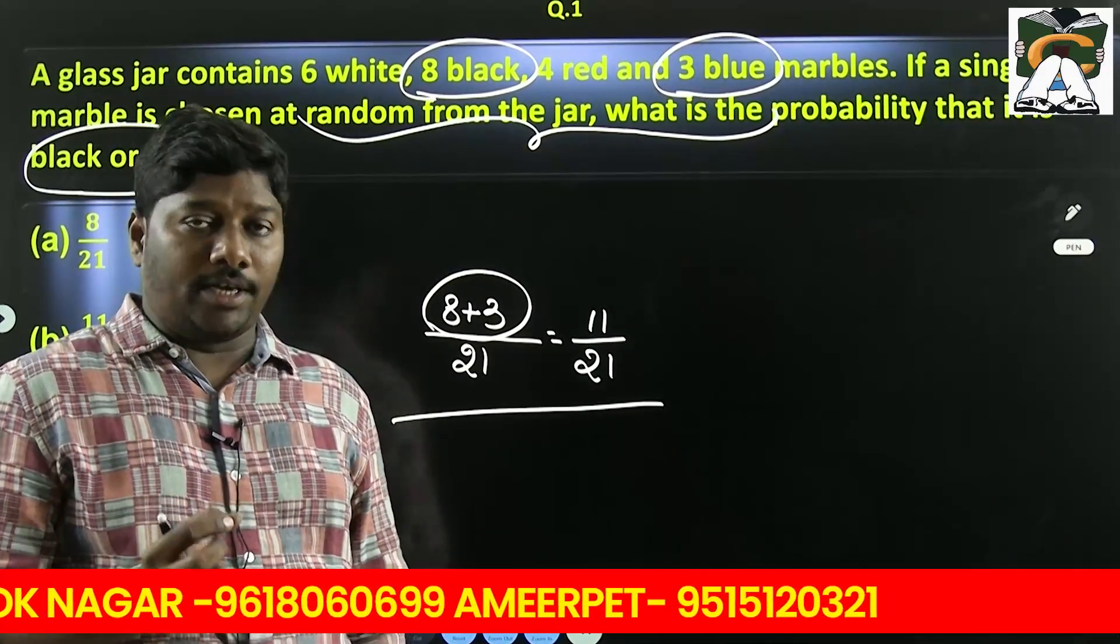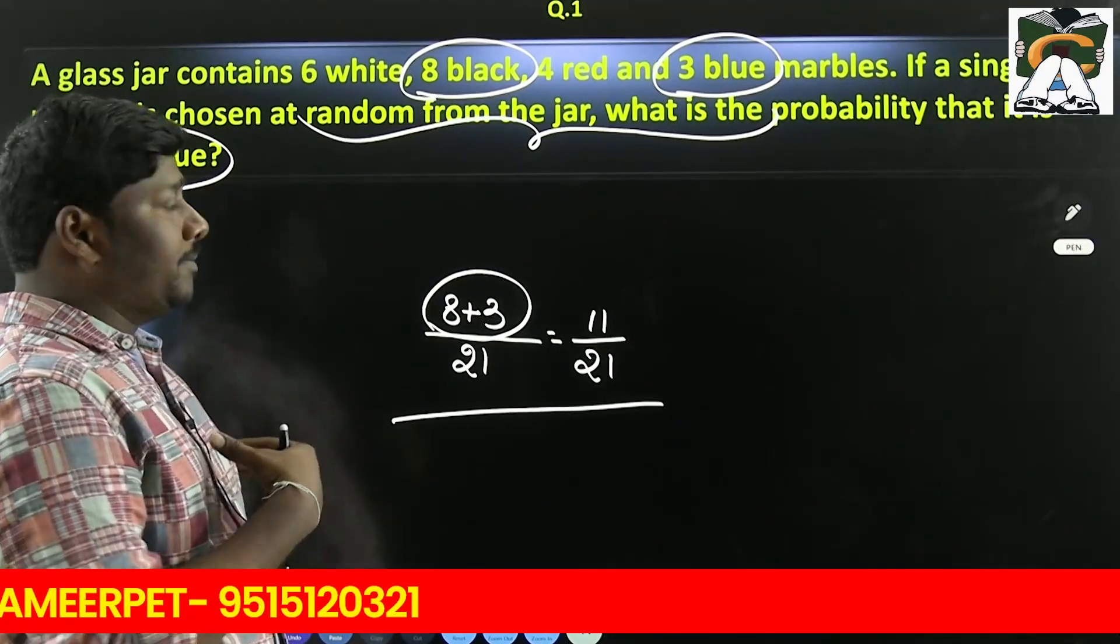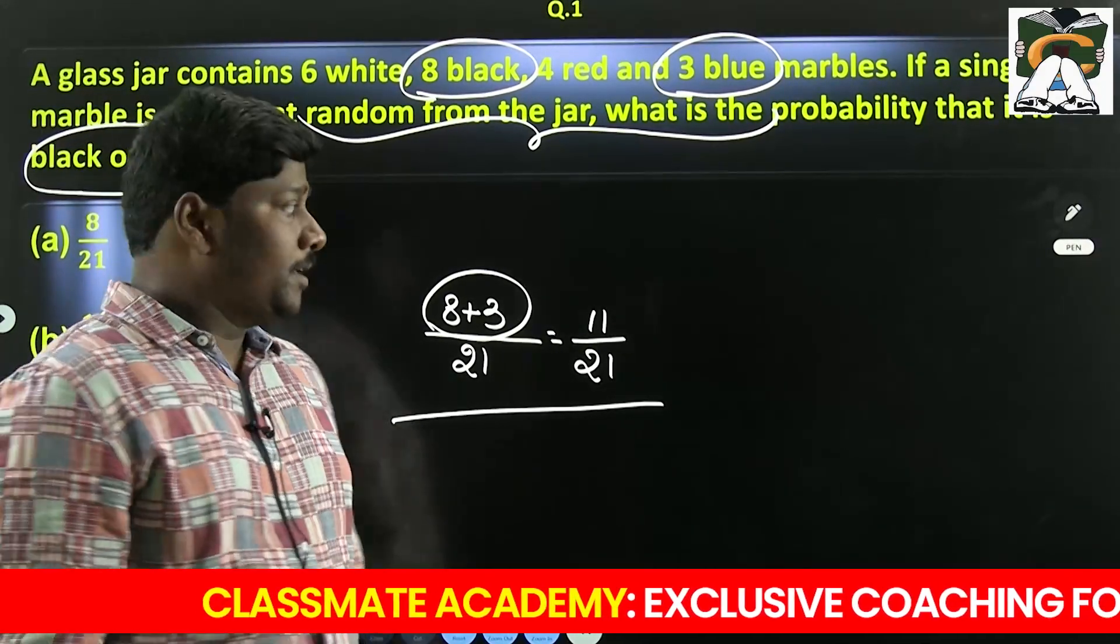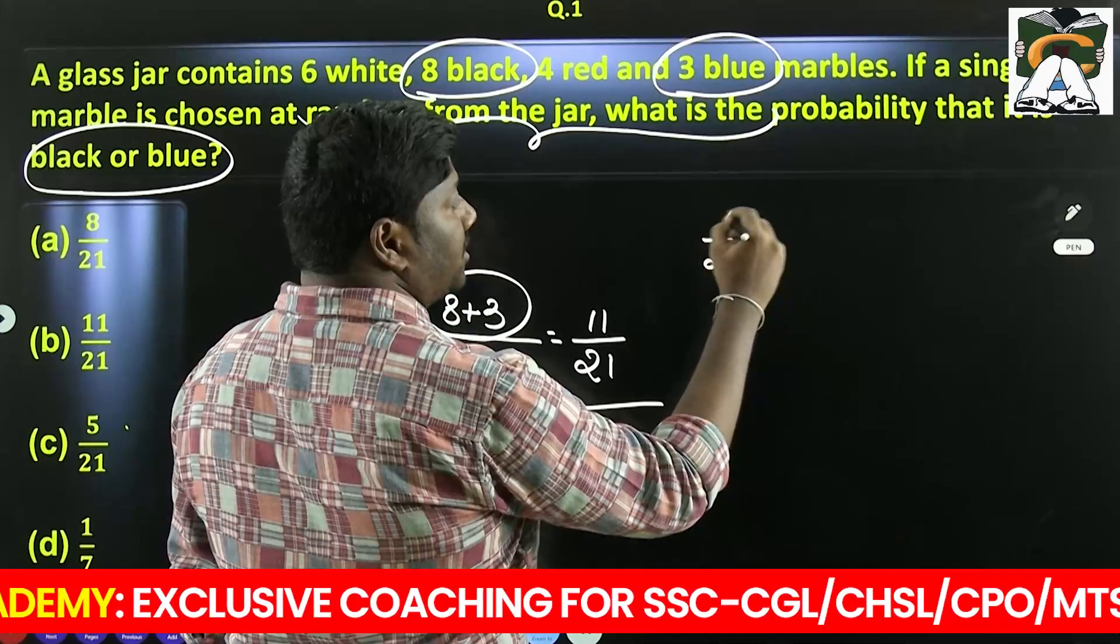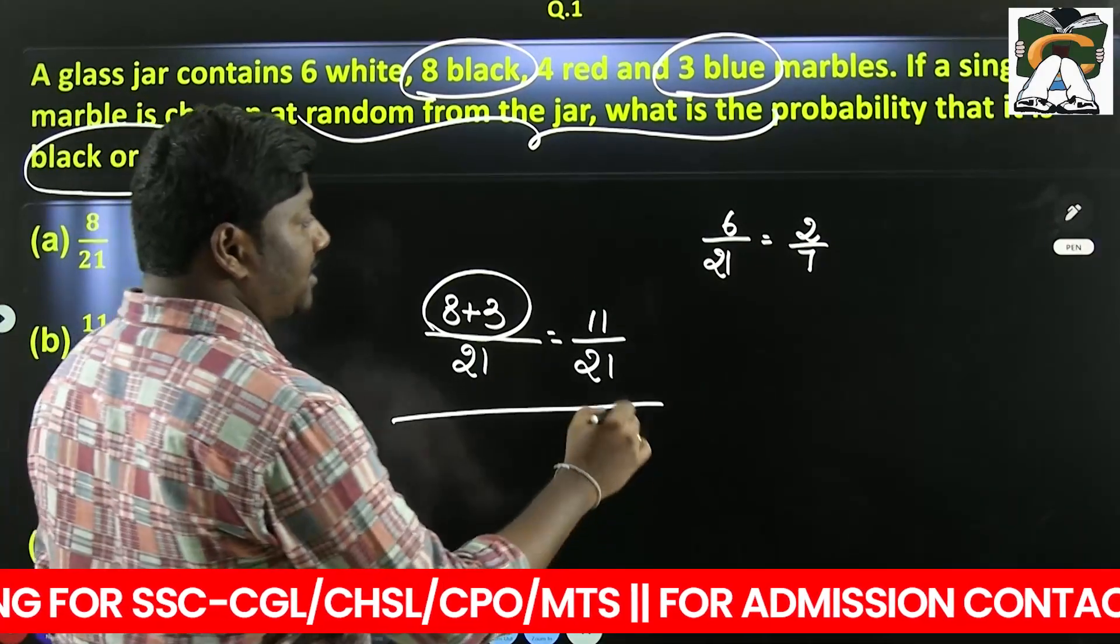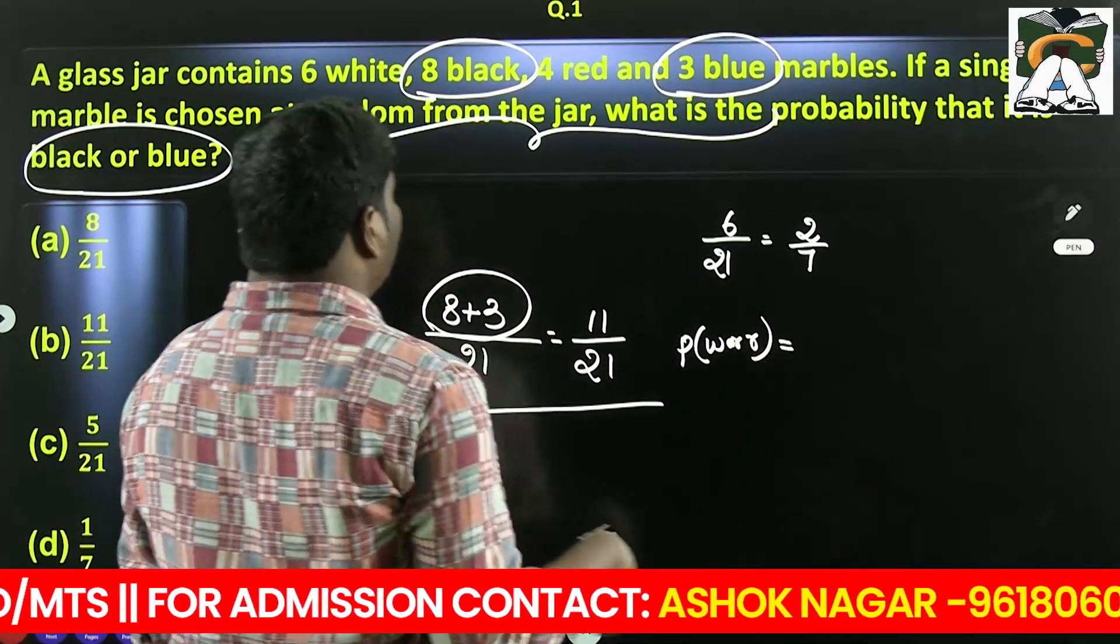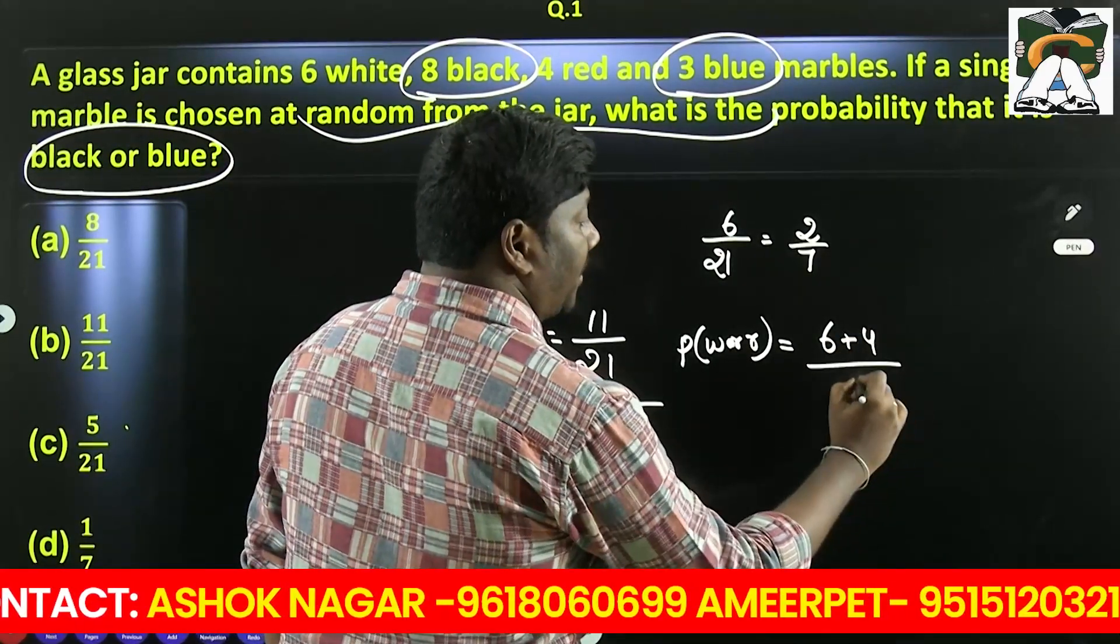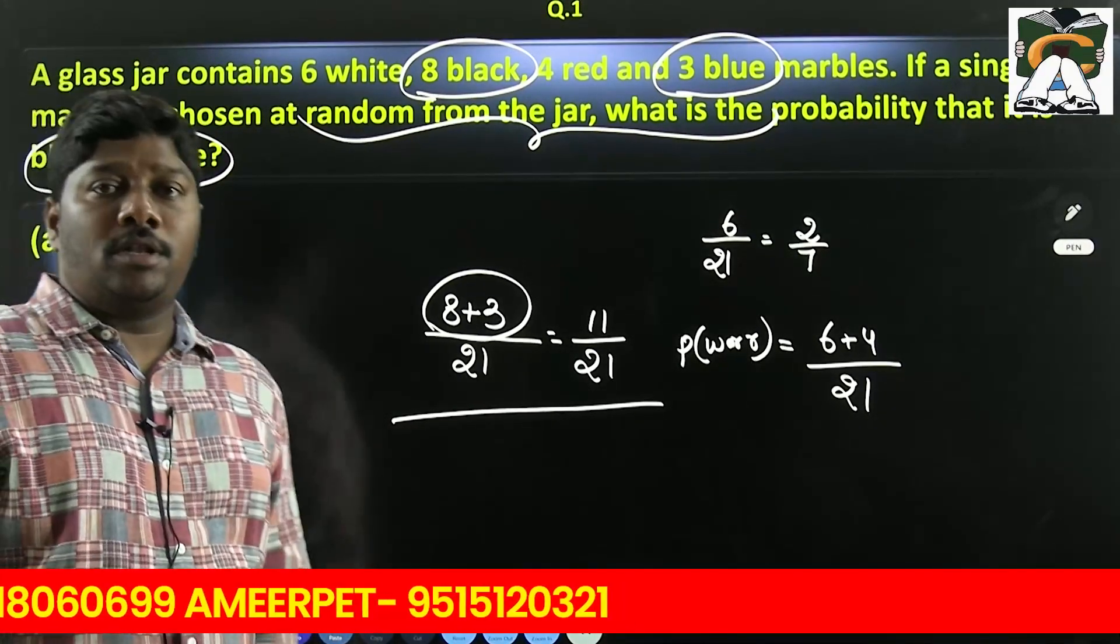Let me show you an example. This is the question. If we take out a marble at random, what is the probability that the marble is white or red? So you can say white or red. Probability that the marble chosen is white or red. White 6 and red 4. So 6 plus 4 divided by 21.